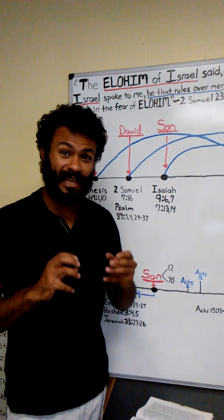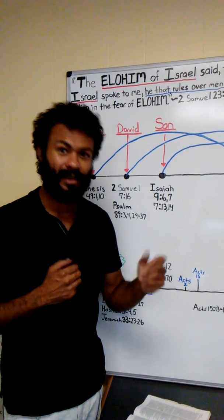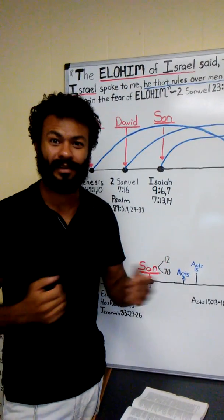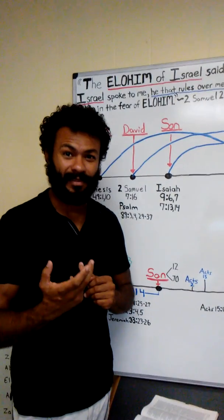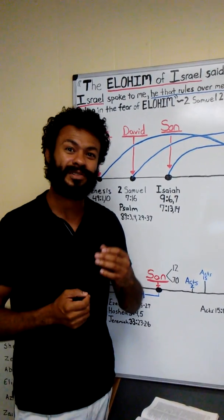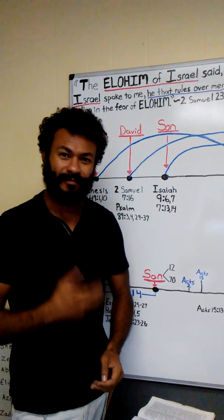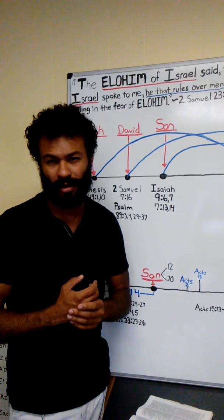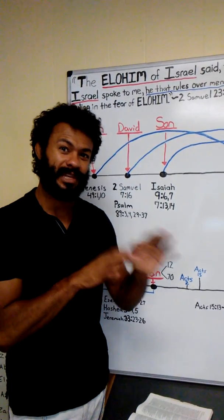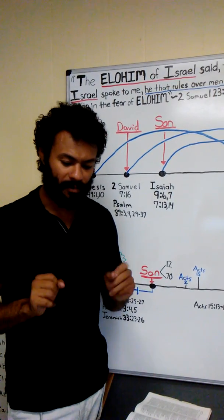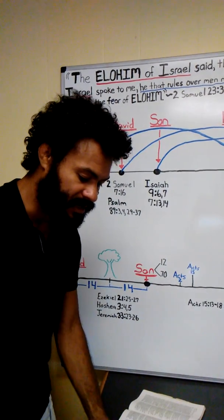He would be raised on butter and honey. This is an idiom for the Torah. We know the land of milk and honey, that the word is like honey, but it's also like butter, like milk. He was raised on the fattest part, the most nutritious part of that milk, that butter, that he would know to refuse evil and to choose good.